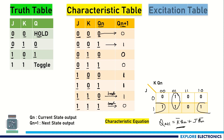Now let us write the excitation table. We write the excitation table by looking at the characteristic table itself — the characteristic table output gives the excitation table.